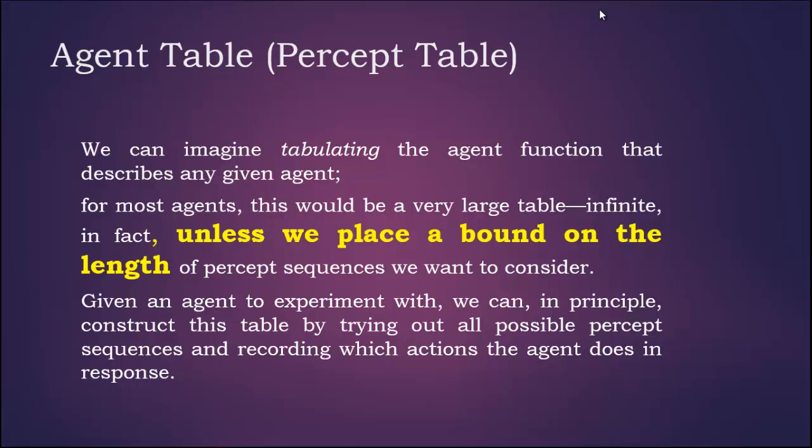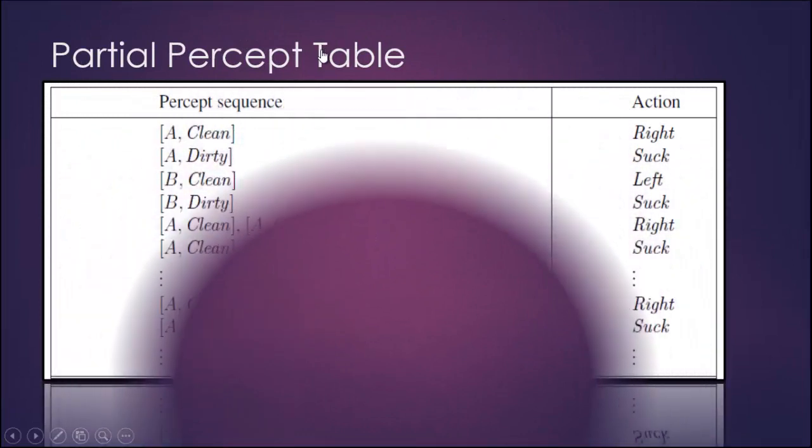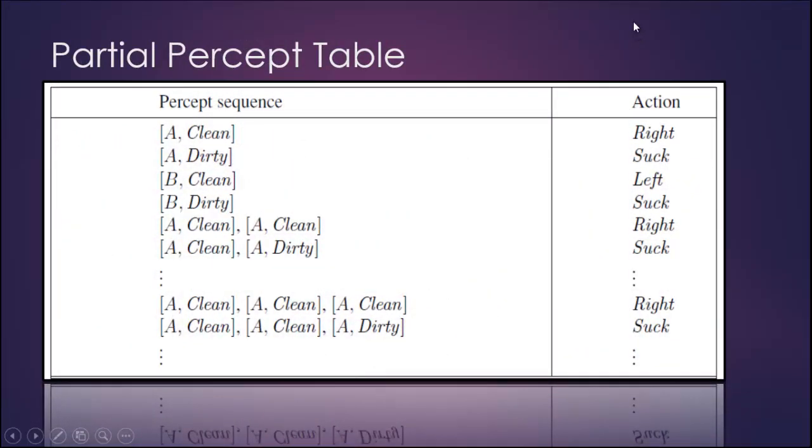Remember that this percept sequence and its action is very useful while acting rationally and performance measurement of agent. These are some examples of percept sequence for the vacuum cleaner. This is the partial table for percept sequence. The table may be very large depending upon the age, percepts, and actions taken by the agent.